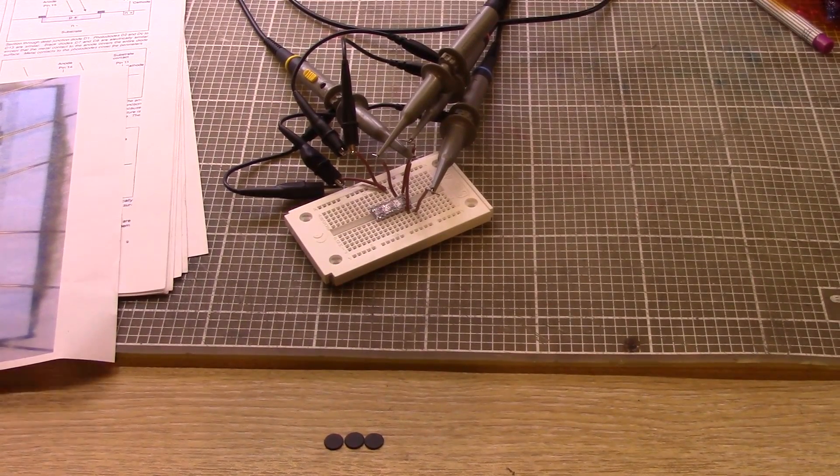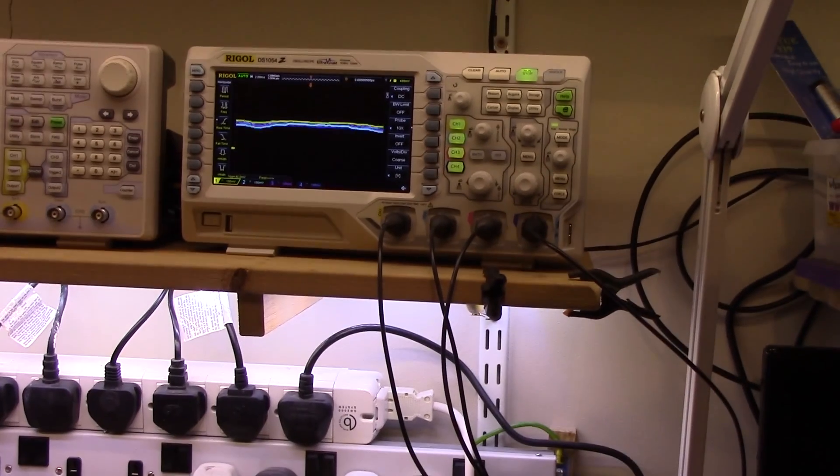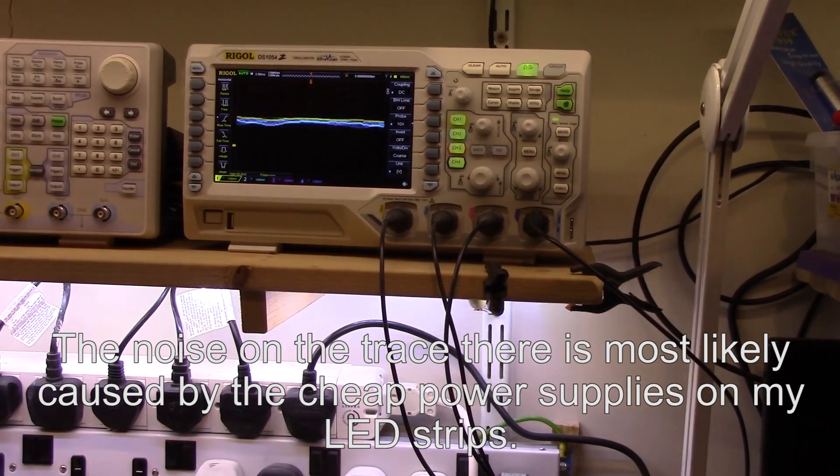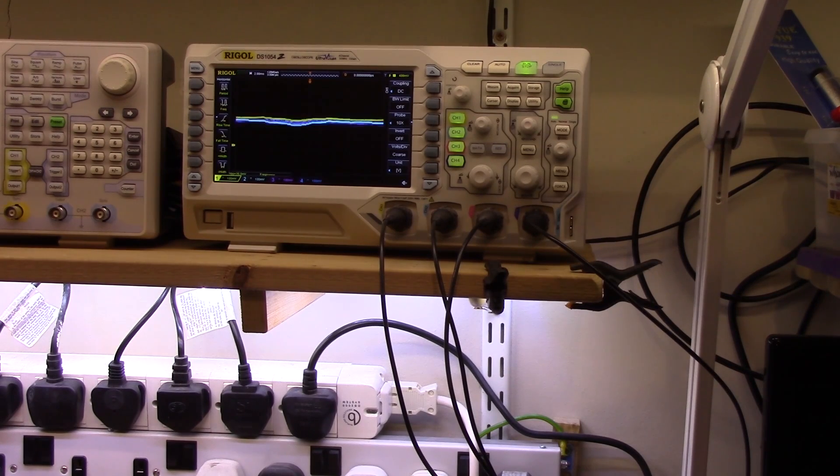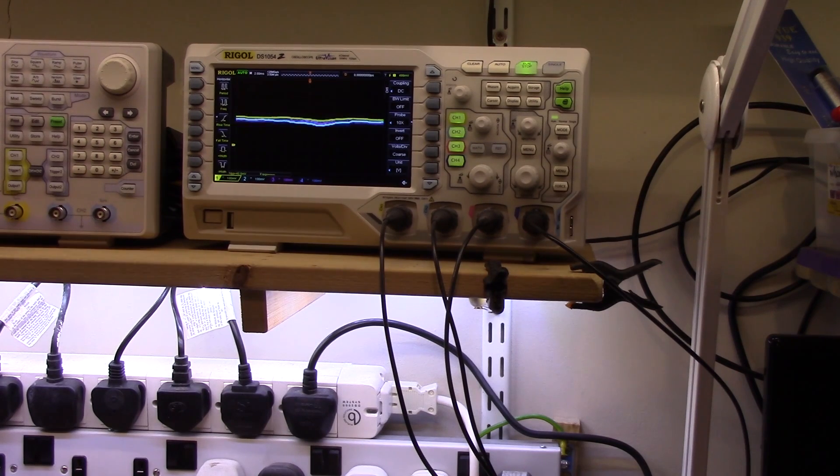So here's our test setup with the scope probes attached. Here's the trace we're getting at the moment. And if I just pass the green laser over the top of the chip you'll see those lines jiggle about. So I'm going to try and capture that and see if I can get it halfway decent.